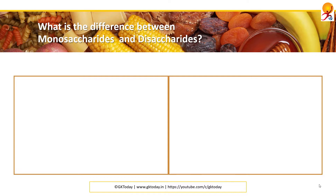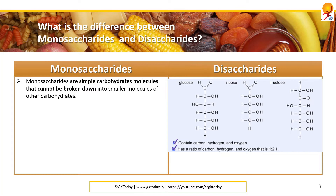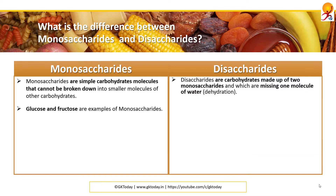What is the difference between monosaccharides and disaccharides? Monosaccharides are simple carbohydrate molecules that cannot be broken down further — you can call them the unit of carbohydrates. Glucose and fructose are examples of monosaccharides. Disaccharides are carbohydrates made up of two monosaccharides which are missing one molecule of water; one water molecule dissociates and the two molecules bond to form a single molecule. The chemical bond between two monosaccharides is known as a glycosidic bond.